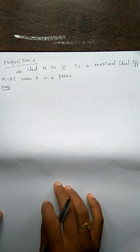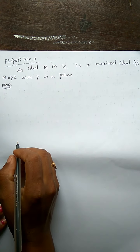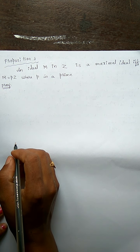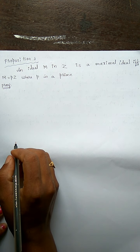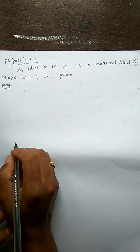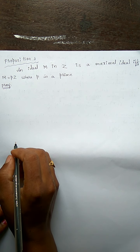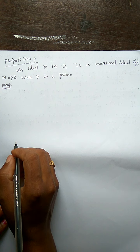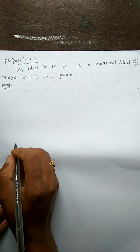Dear students, in this video we shall discuss some propositions related to maximal ideals. Proposition number 3: an ideal M in a ring Z is a maximal ideal if and only if M is equal to pZ, where p is a prime.